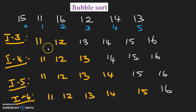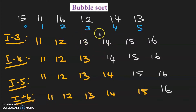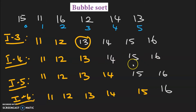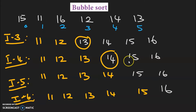In the third iteration, the first two elements are already in position. So the third position element is being searched. We can see the comparison happening. At the end of the third iteration, the third element is in its position. In the fourth iteration, the first three elements are in position, so the fourth element comparison happens. At the end of the fourth iteration, the fourth element is in position.